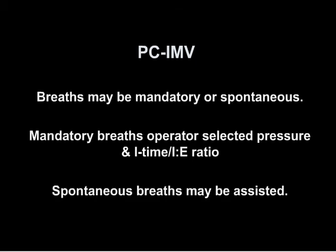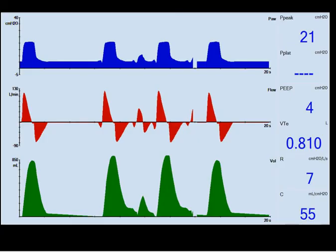Pressure control IMV: breaths may be mandatory or spontaneous. Mandatory breaths are operator-selected pressure, with a constant I-time and IE ratio. Spontaneous breaths may be assisted. In the waveforms, we see fixed mandatory breaths at a fixed pressure for a fixed amount of time. The flow waveform shows flow distortions, and the pressure waveform reveals spontaneous breaths in between mandatory breaths. The spontaneous breaths are not for a fixed amount of time and look totally different from the mandatory breaths. This patient is on pressure control IMV with approximately 5 centimeters of water pressure support to augment spontaneous breathing.